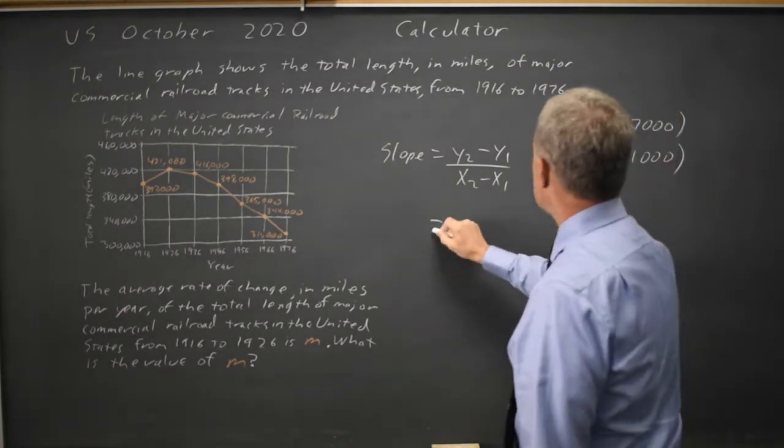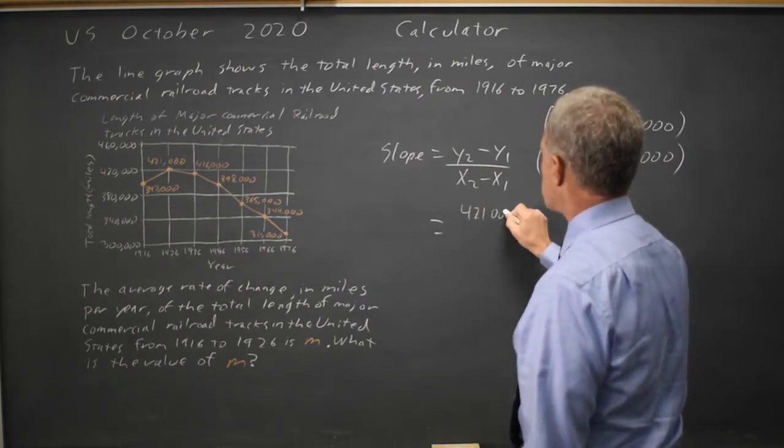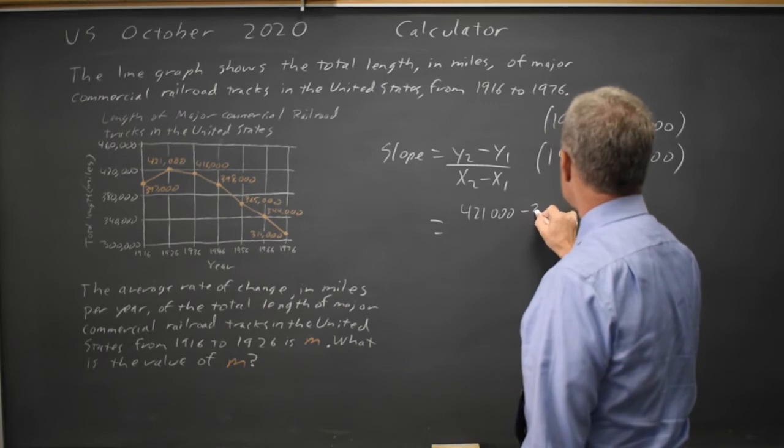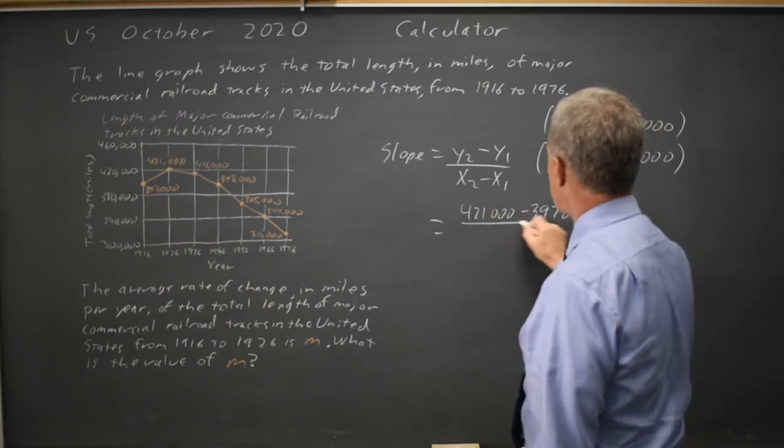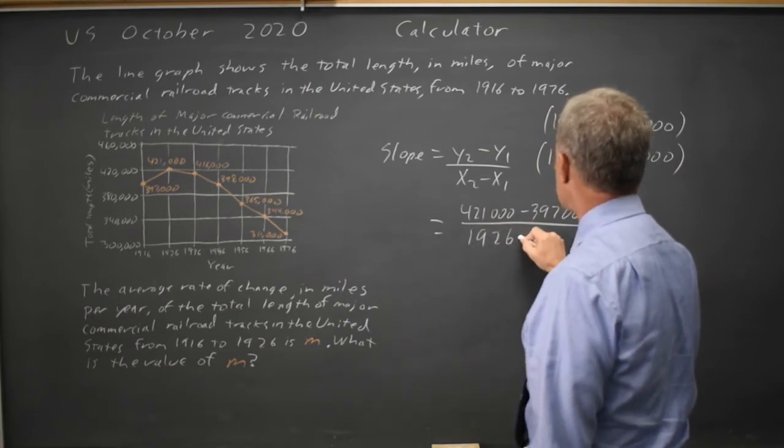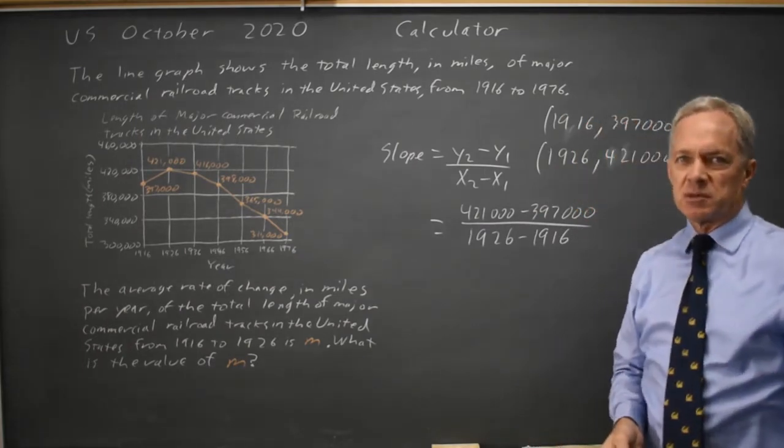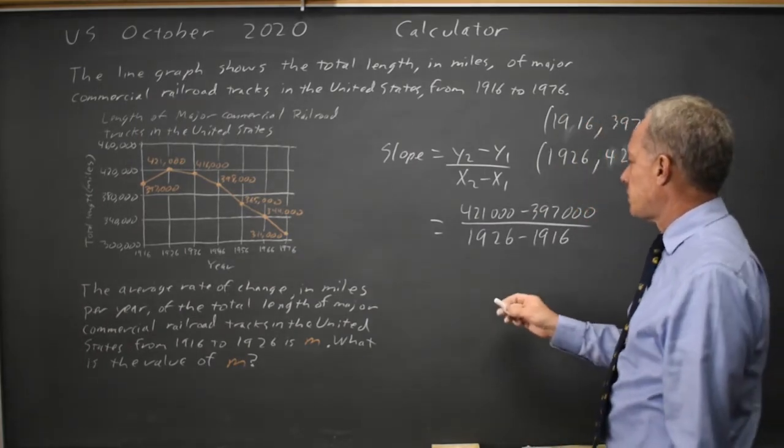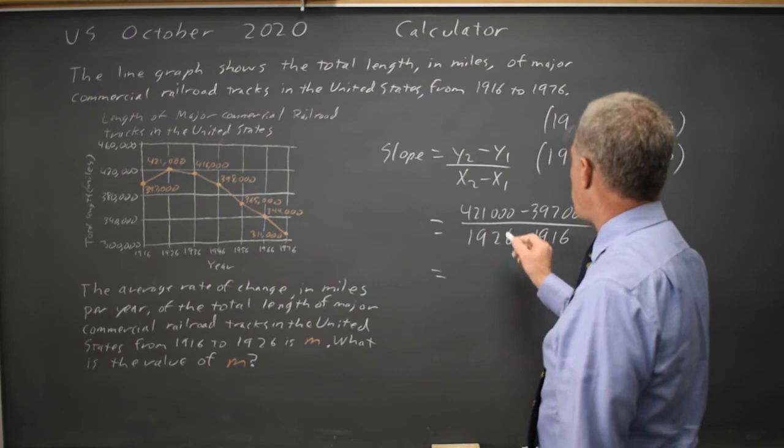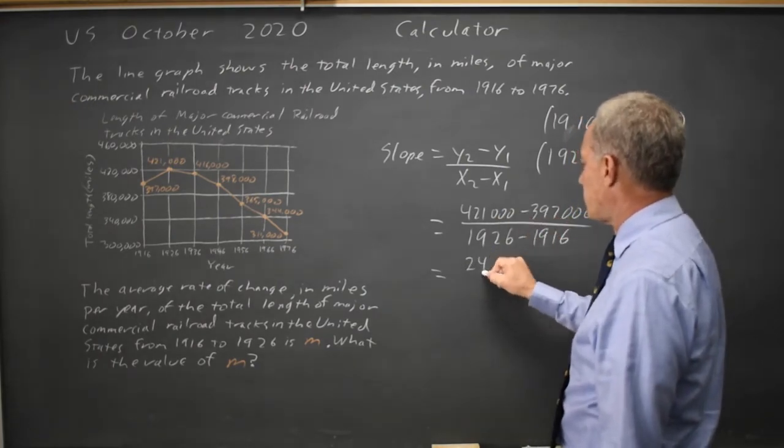So my slope is the difference in y values, 421,000 minus 397,000 divided by the difference in x values, 1926 minus 1916. You can swap the order on these, but I like to get both numbers positive if that's an option. And 421,000 minus 397,000 is 24,000.